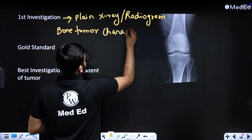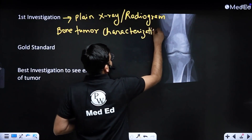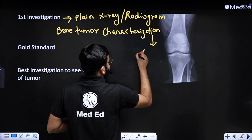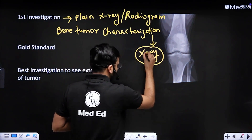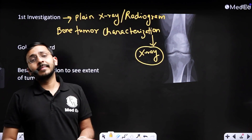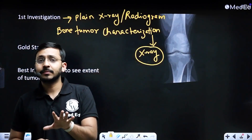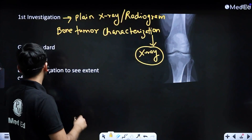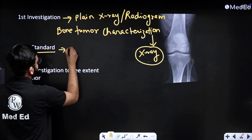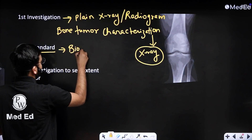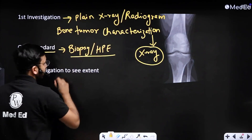Bone tumor characterization is done on x-ray. This is one of the important topics where the diagnosis is made on x-ray — you don't need a CT scan or an MRI to make the diagnosis provisionally. However, the gold standard for diagnosis of bone tumor is biopsy, or histopathological examination.